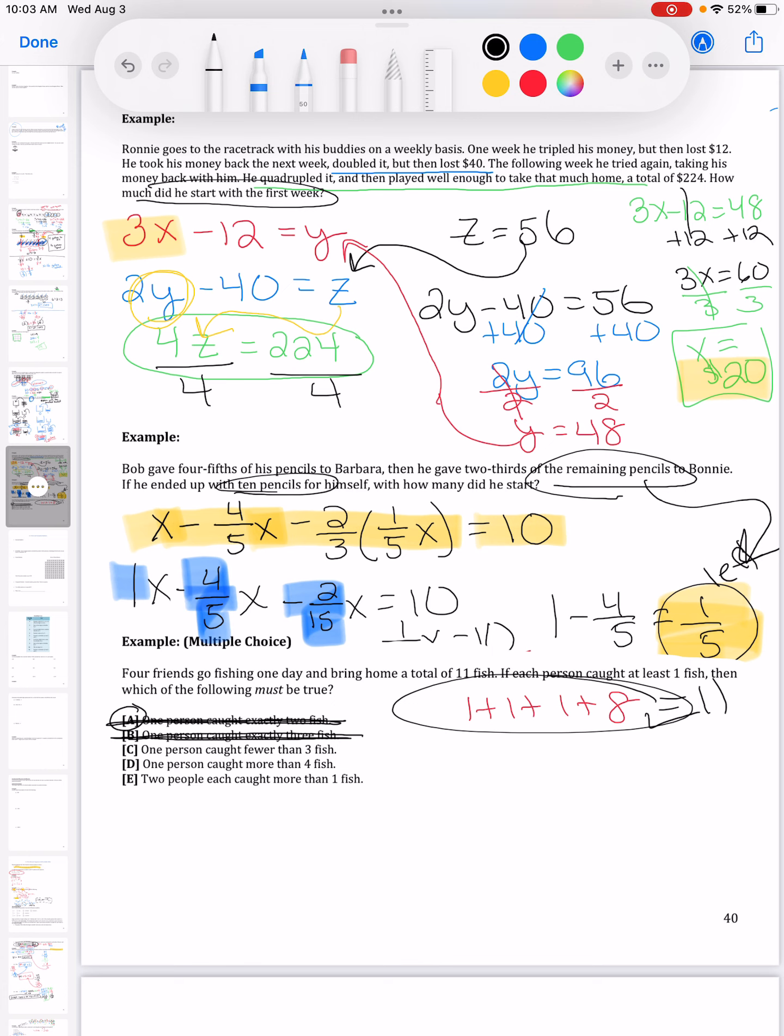C here, one person caught fewer than three fish. Well that works for this example, but let me see if I can make it not work because the whole key is to see if we can make it false. So I'm going to see if I can make a different set of eleven. One person caught fewer than three fish.